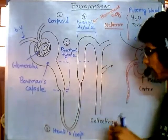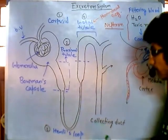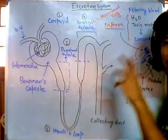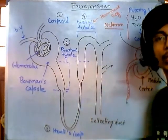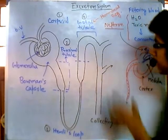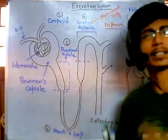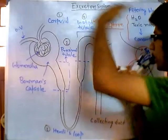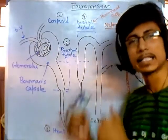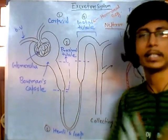And the fifth part, the collecting duct — or collecting tubule, whatever you can say — this part is also under hormonal regulation or hormonal control. And this part does not have a major task, just collecting the urine coming from all of these different nephrons, and then supplying it to the ureter, finally releasing it outside.